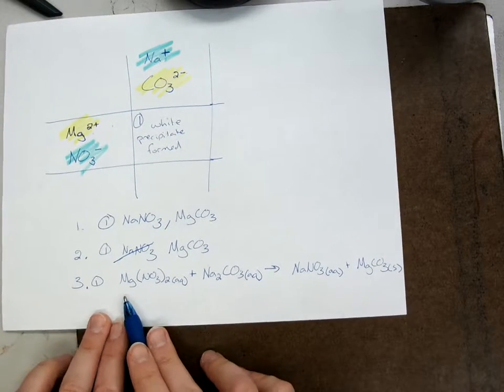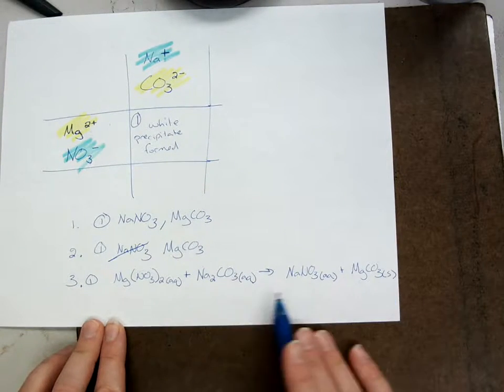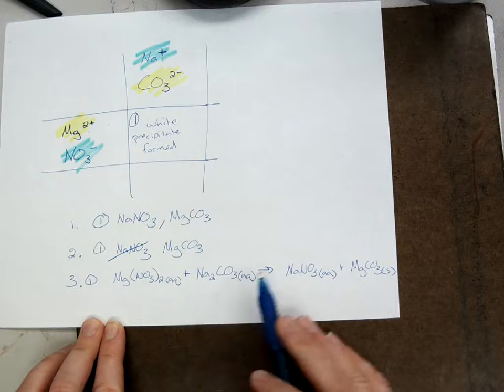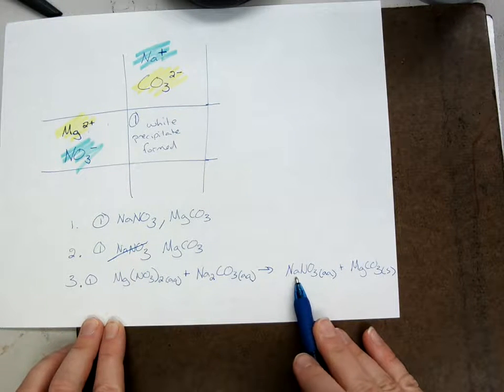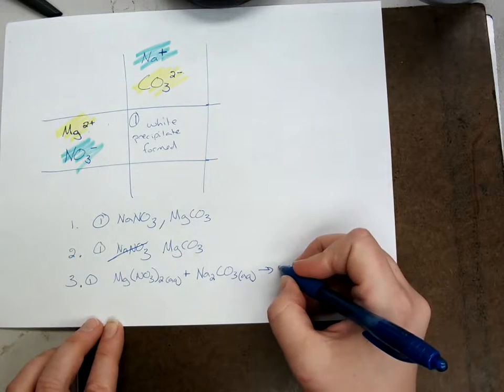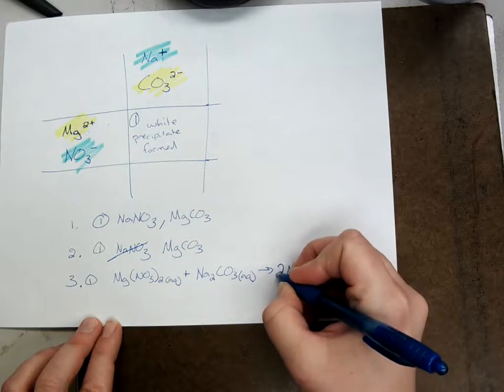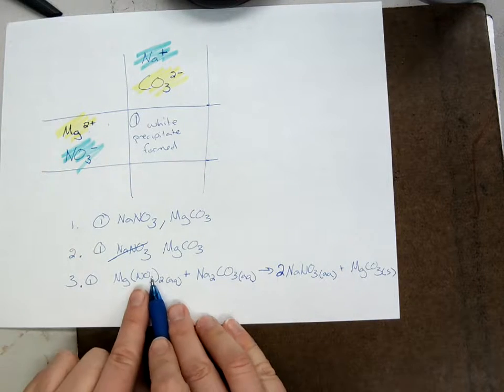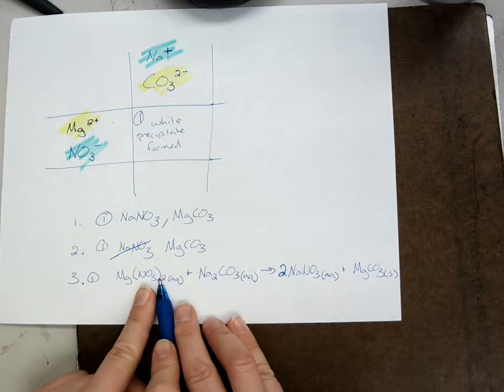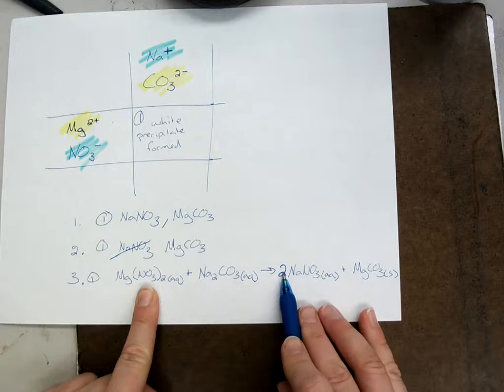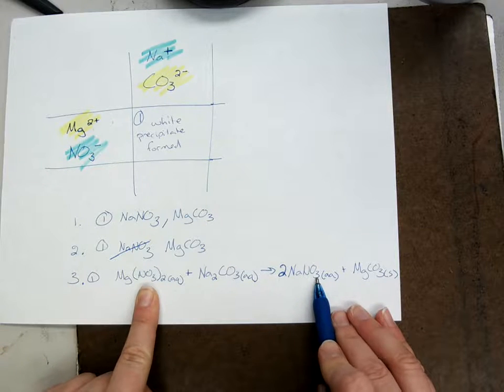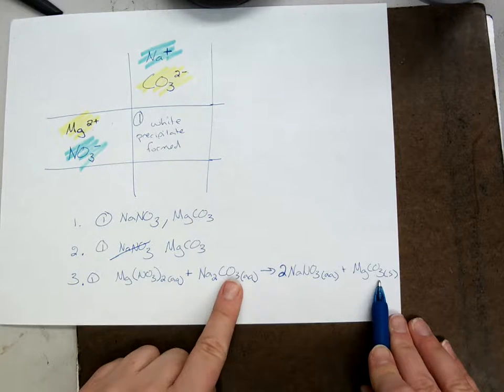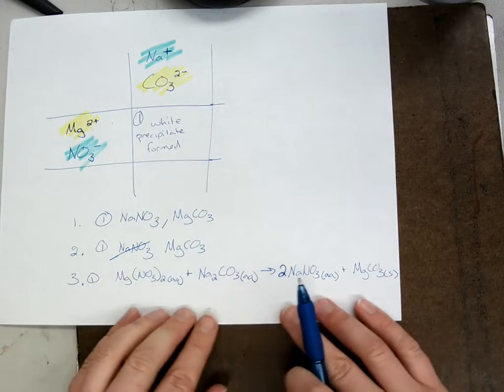I got one more little thing I gotta do. I gotta balance this. See how I have two sodiums here? Two sodiums before the reaction. I need two sodiums after the reaction. I put a big two in front. That also fixes the nitrates. See the nitrates with the two outside the parentheses? If I start the reaction with two nitrates, I also need to end with two nitrates. I think everything else is balanced. One magnesium on each side, one carbonate on each side. All of that.